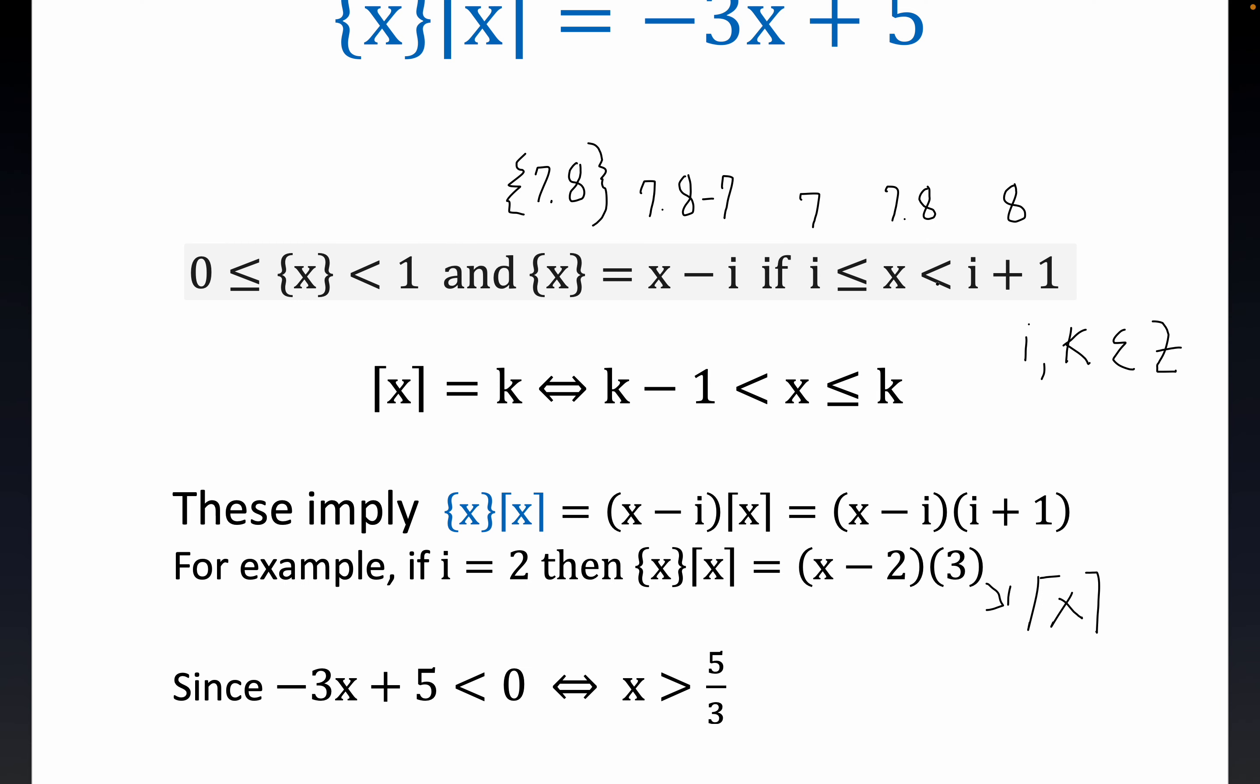You see, folks, if i is 2, if i is equal to 2, you have 2 right here. Then x is certainly between 2 and 3. So that means the ceiling of x would be equal to 3. And of course, it's x minus i is x minus 2. So you see, we've got this thing in a linear type of form. It's useful, very useful.